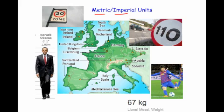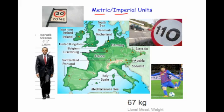For instance, Lionel Messi's weight is given as 67 kilograms on the Barcelona website, because Barcelona is in Europe and they measure in kilograms. Yet in the UK we would probably give his weight in stones and pounds. Similarly, Barack Obama's height in the UK and America would be given as six foot one inch, whereas in Europe they would say 1.85 meters. In later videos you'll be able to see how to convert between each of them.